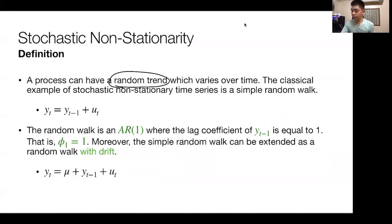The random walk model is yt equals yt minus 1 plus ut. Note that in here, we are implicitly assuming that the value of phi is equal to 1, because the coefficient of yt minus 1 here is just equal to 1.